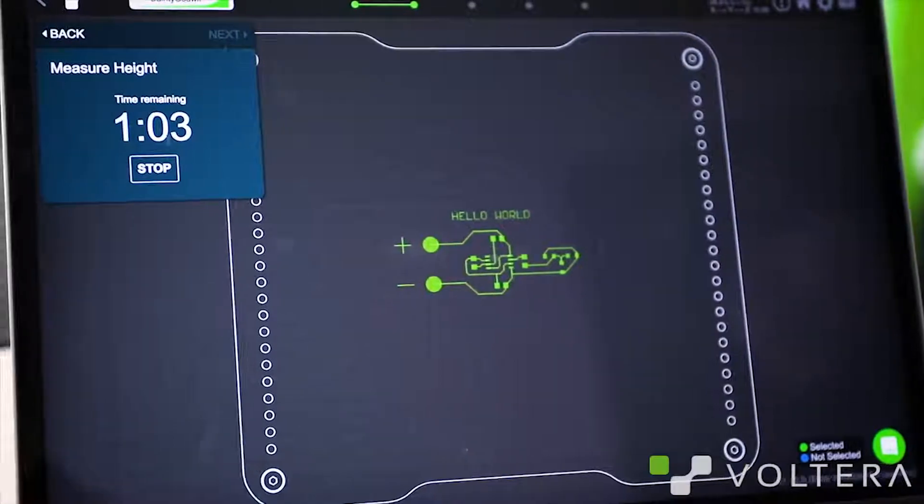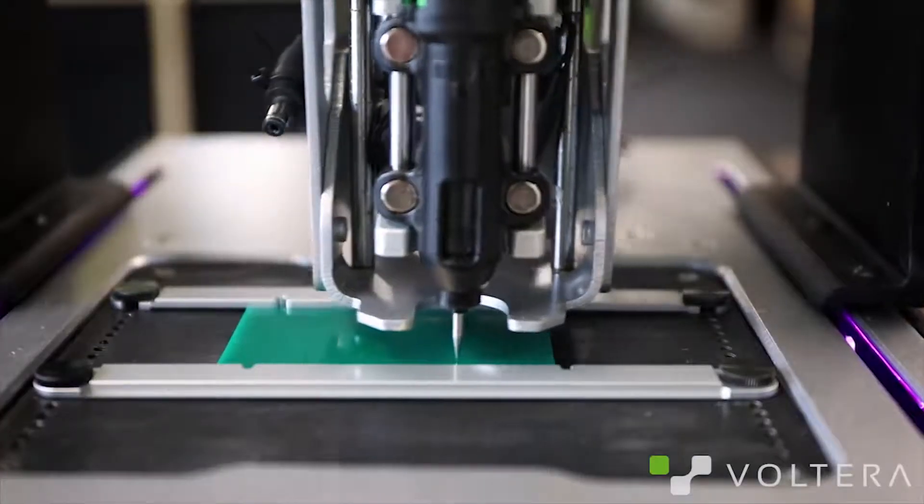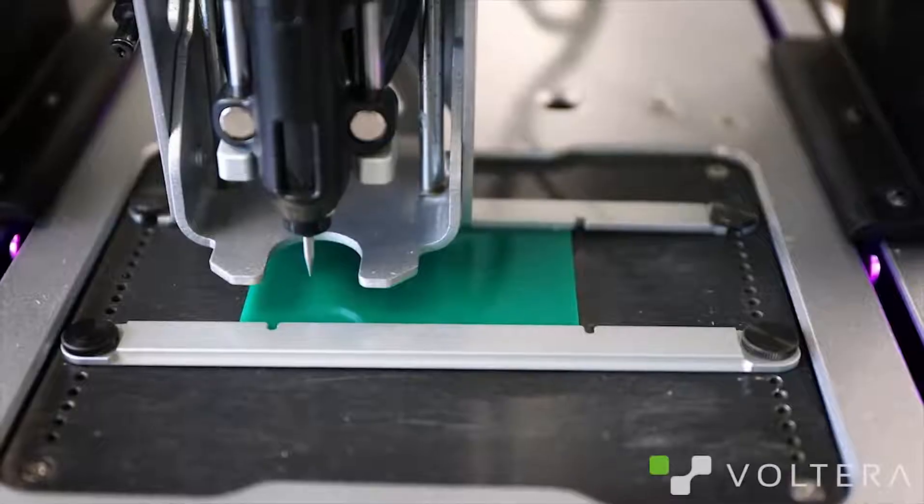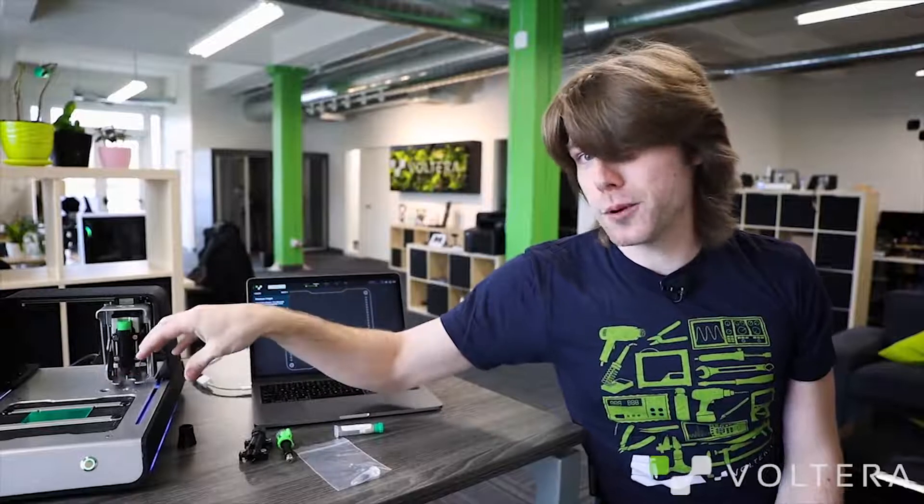Now, we've got to map the Z height of the board. This baby is mapped. Now, we can't move it. We're going to have to redo that process.